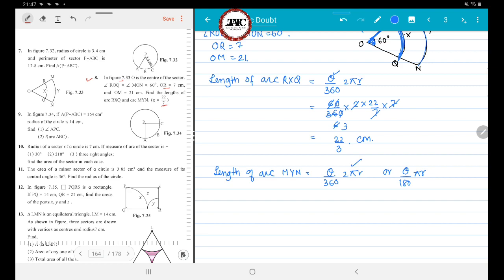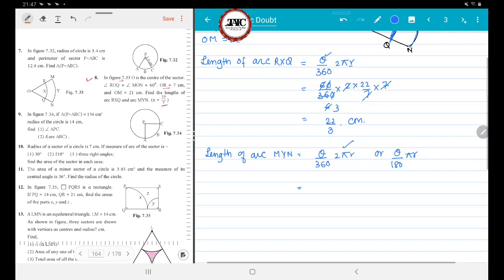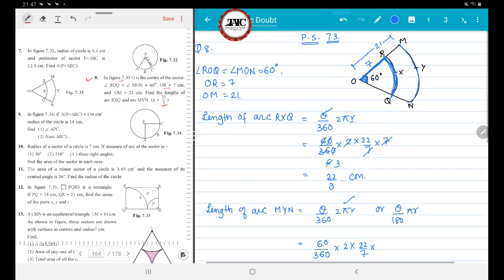But we are going to use the same thing I used earlier. Theta is how much? Again, theta will remain 60. Then 360 multiplied by 2 multiplied by pi is 22 by 7, and now observe the radius.